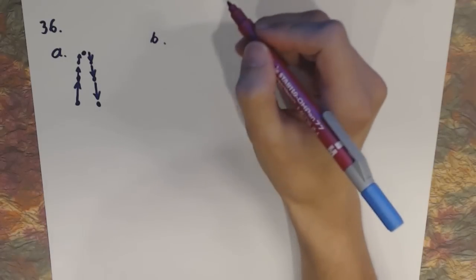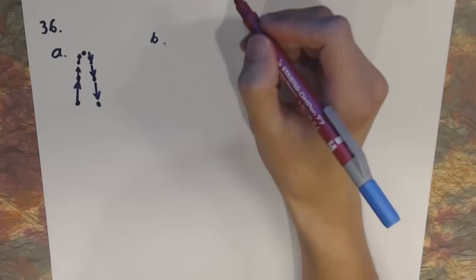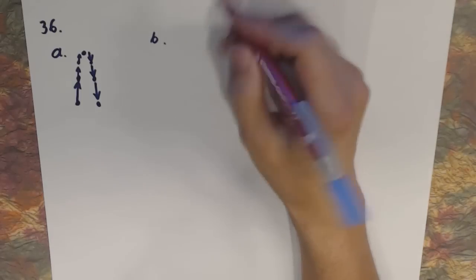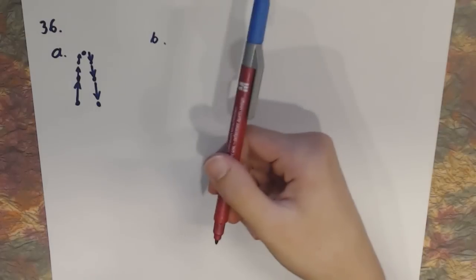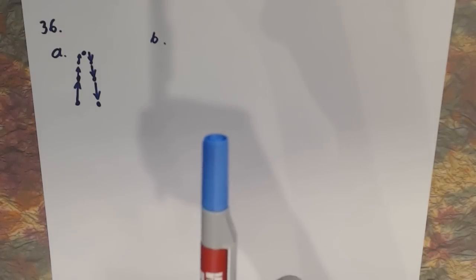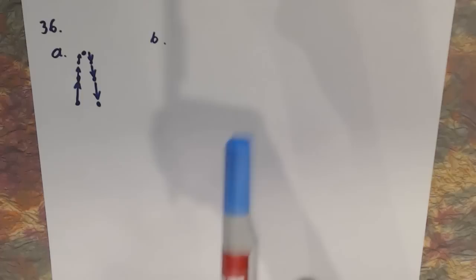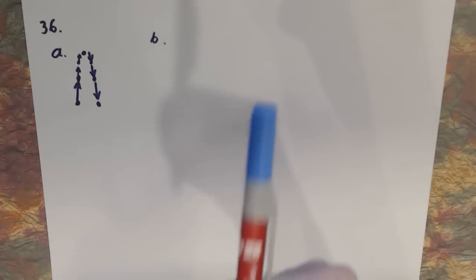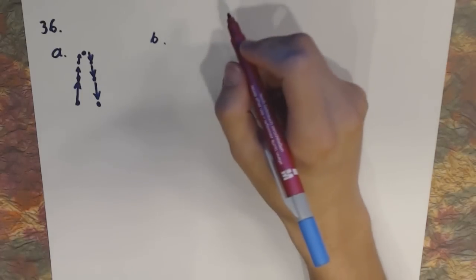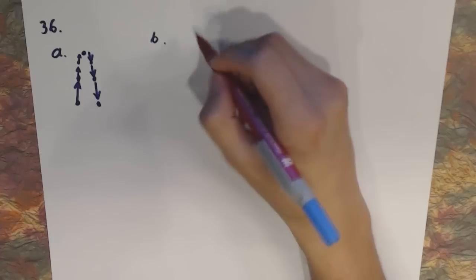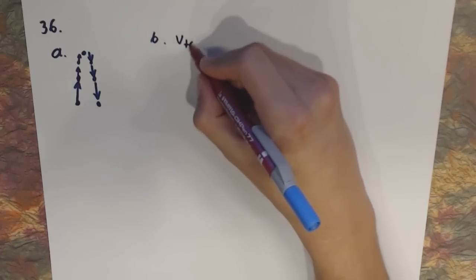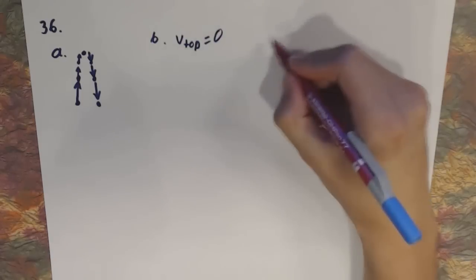Part B asks: what is the velocity when it reaches its maximum altitude? Whenever you throw something up and then it comes back down, it's always going to stop instantaneously and have zero velocity at the top of its trajectory. So the answer to Part B is the velocity at the top equals zero.